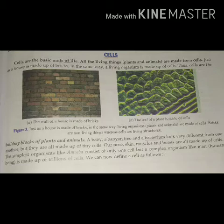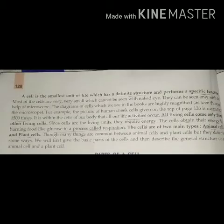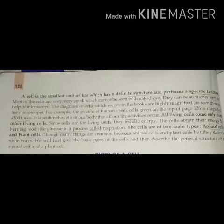All living things — plants and animals — are made of cells. Just like our house is made of bricks, the living organism is made of cells. Our body also has different types of cells and even trillions of cells. Cells are the smallest unit of life which have a definite structure and can perform a specific function. We can only see them with the help of a microscope. They have a requirement of energy, which they get from respiration.